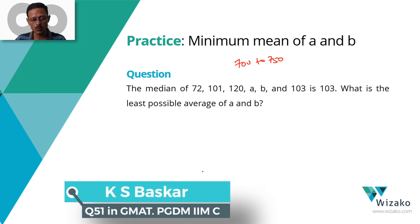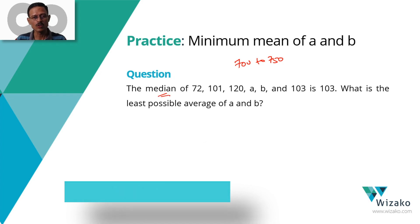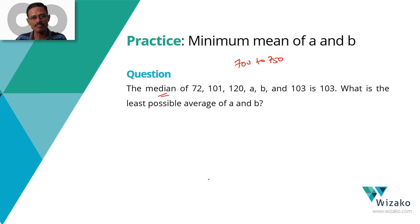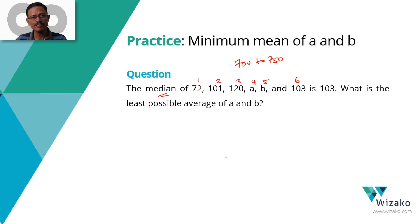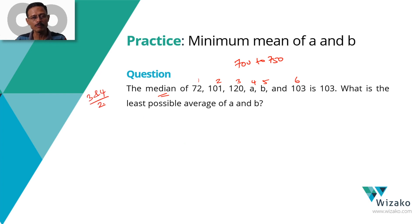The median of 72, 101, 120, a, b, and 103 is 103. We're computing the median, so the first thing we need to check is how many observations we have — that's 6, an even number. For an even number of observations, we write the numbers in ascending order, pick the third and fourth numbers, and find their arithmetic mean. The third plus the fourth number divided by two equals the median, which should be 103. That's the constraint we need to meet.